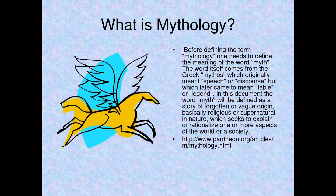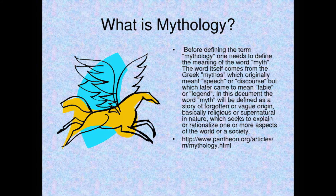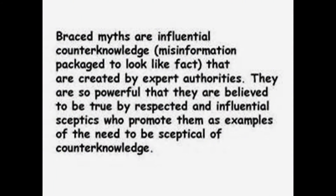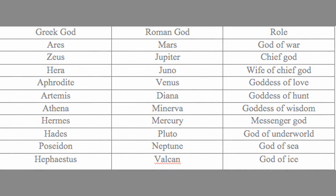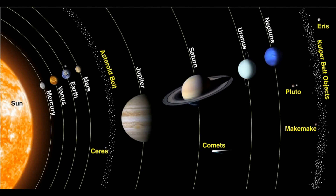Let's get the definition of mythology. Mythology: the myths of a particular group or culture — ideas that are believed by many people but that are not true. So as we know, these planet names derive from Greek and Roman mythologies. These are not true. None of these Greek or Roman planets exist.